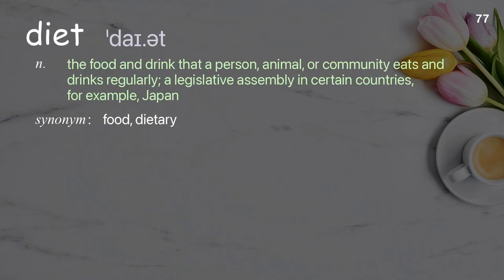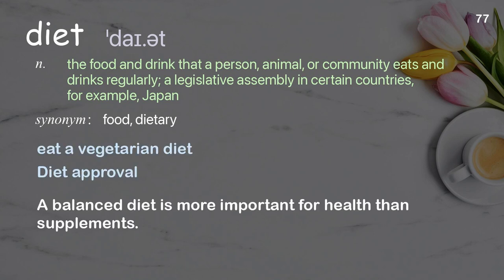Diet: The food and drink that a person, animal, or community eats and drinks regularly; a legislative assembly in certain countries, for example Japan. Examples: Eat a vegetarian diet, diet approval. A balanced diet is more important for health than supplements.